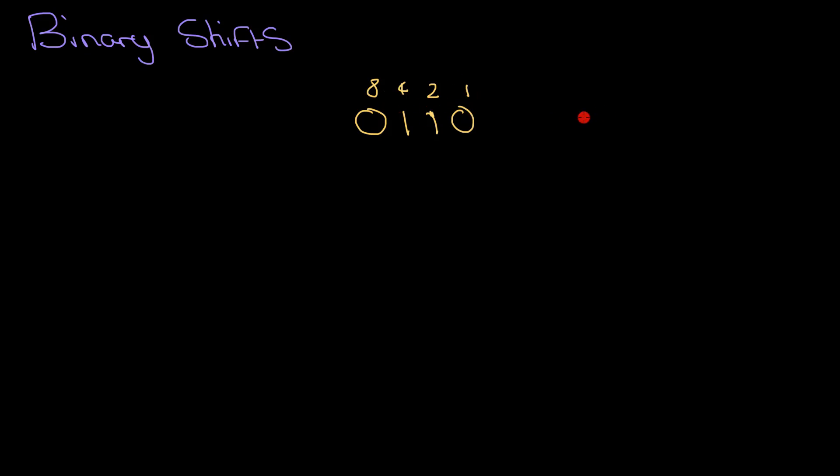I've got a binary number here. I want to figure out what the denary value of it is. So there you go, 0, 1, 1, 0. That equals 6. All right, let's start shifting.